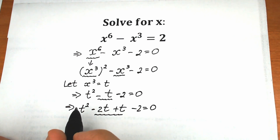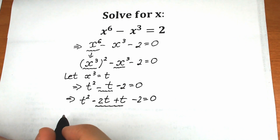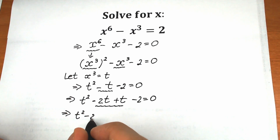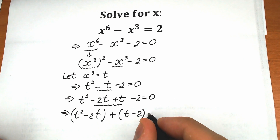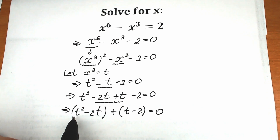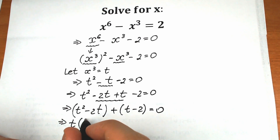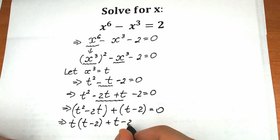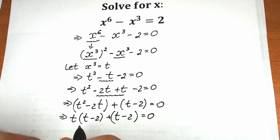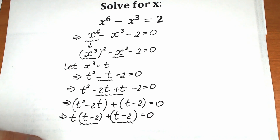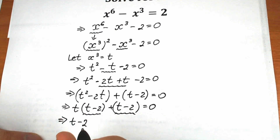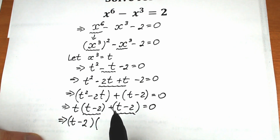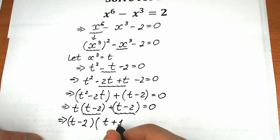Right now let's group t squared minus 2t in one parenthesis and t minus 2 in another parenthesis. Factoring t from the first group gives t times (t minus 2), and the second group is plus 1 times (t minus 2). Since both groups contain (t minus 2), we factor it out to get (t minus 2)(t plus 1) equals 0.